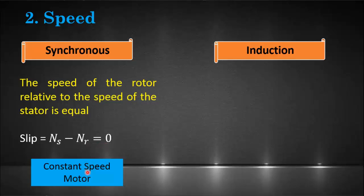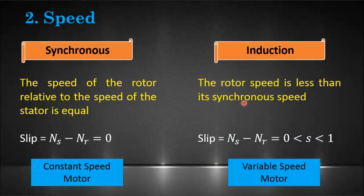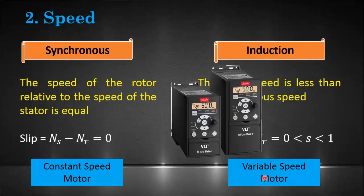In the induction motor, the rotor speed is less than the synchronous speed, and this difference is called slip. The value of slip is always between zero and one. At standstill, when the rotor does not rotate, slip is maximum and equals one. At maximum speed, slip is very low but will never equal zero, because both speeds cannot be equal in an induction motor. It is also a variable speed motor.